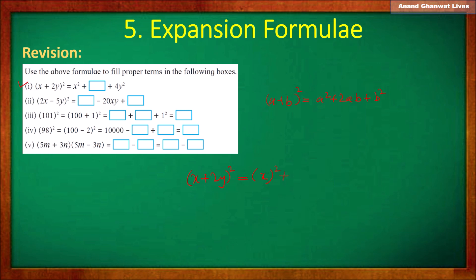...x times 2y; plus the square of the second term, which is (2y)². The square of x is x², plus the product of 2x and 2y: 2 × 2 = 4, so we get 4xy.